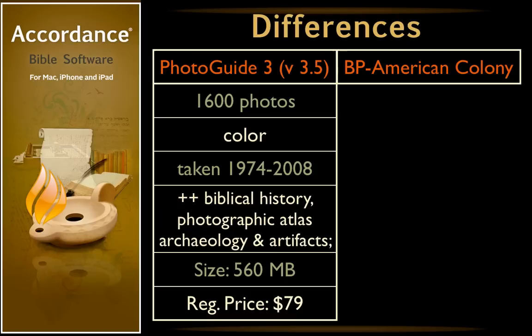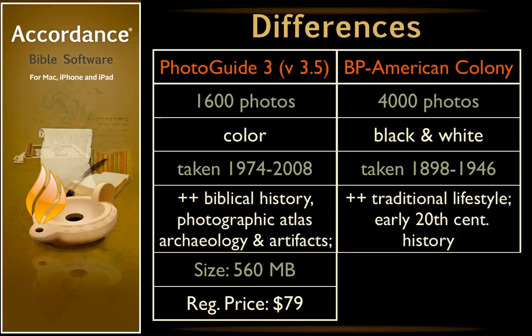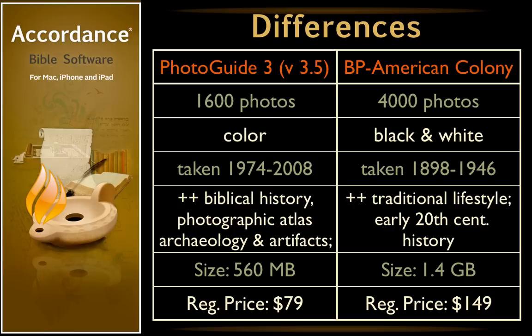The Biblical Places American Colony collection has 4,000 photographs, two and a half times the number of Photo Guide 3, although they are only black and white. That's to be expected, as they were taken between 1898 and 1946. The strengths of this collection are its photographs of traditional life and the historical photographs of the Holy Land in the late 19th and early 20th century. The module is huge at 1.4 gigabytes and normally retails for $149.